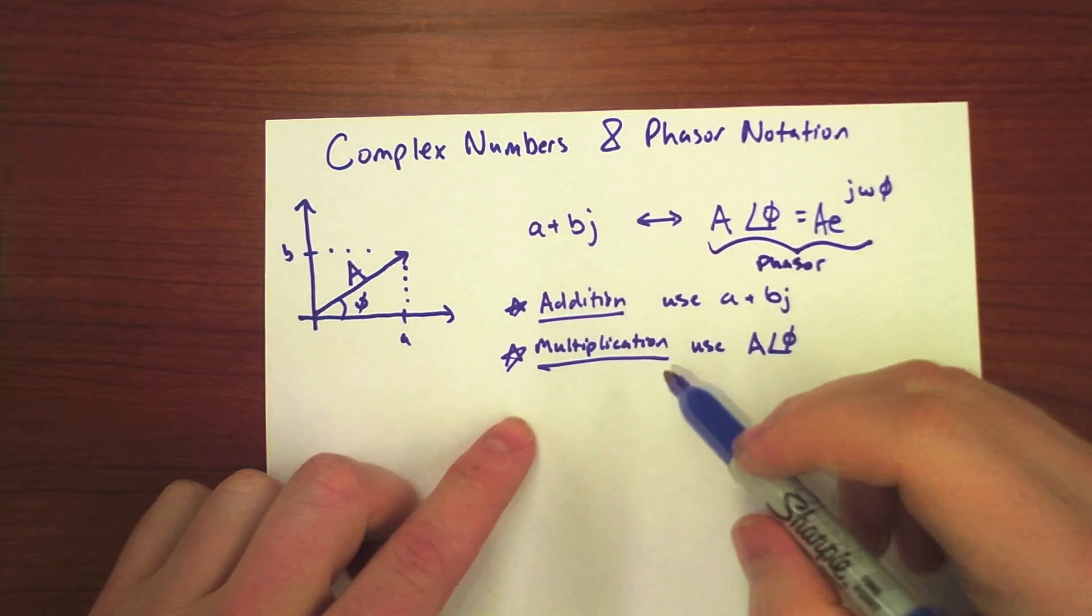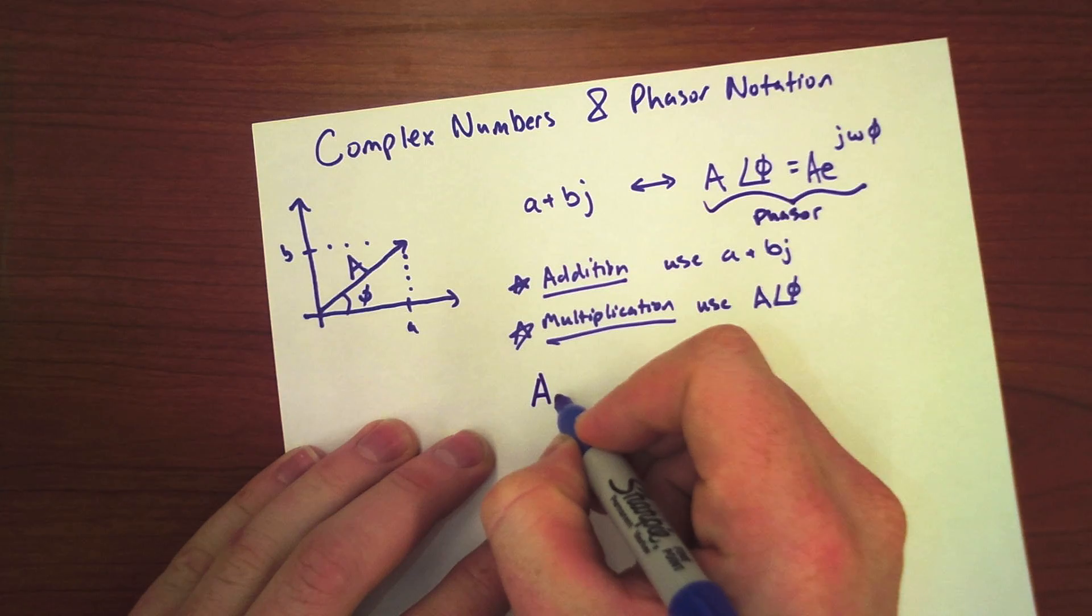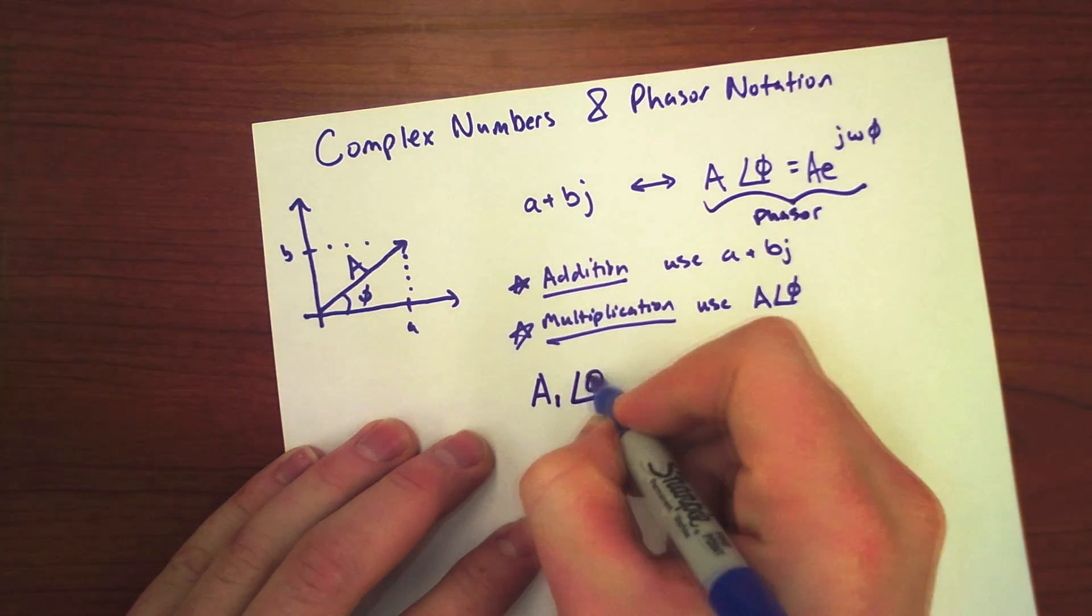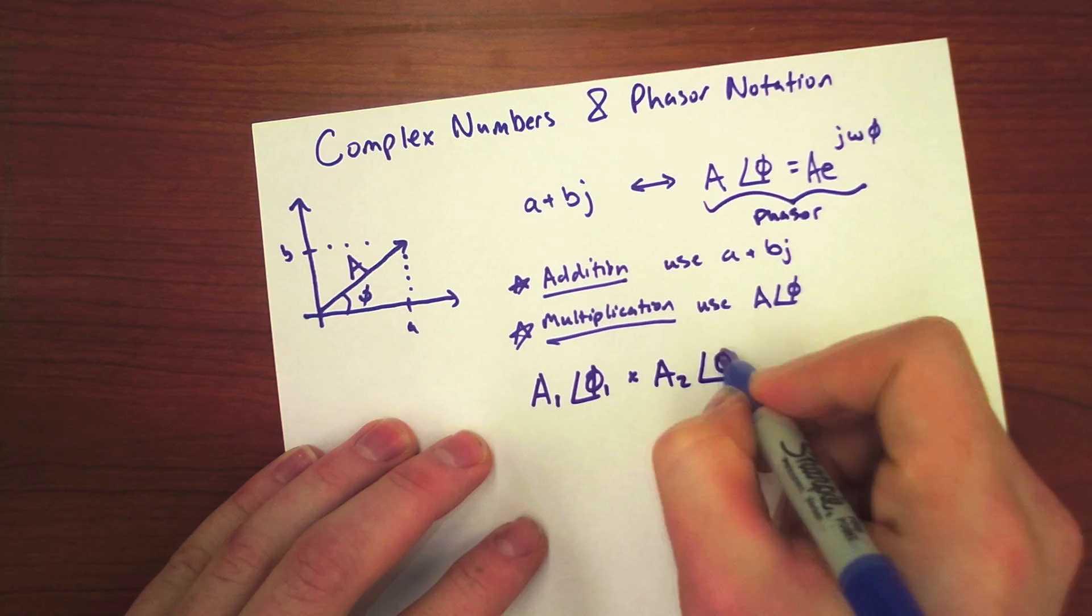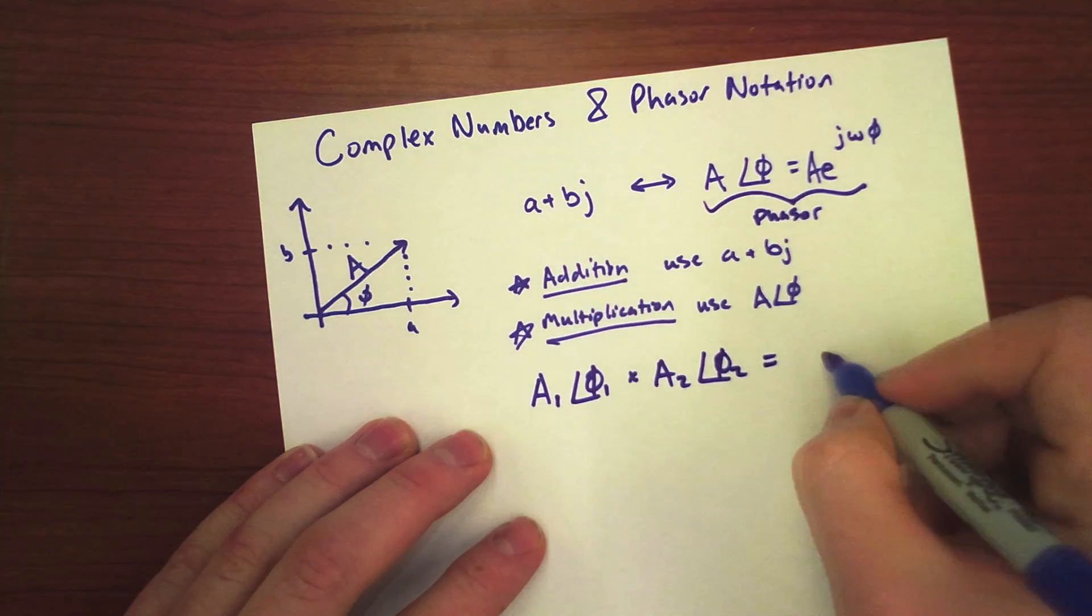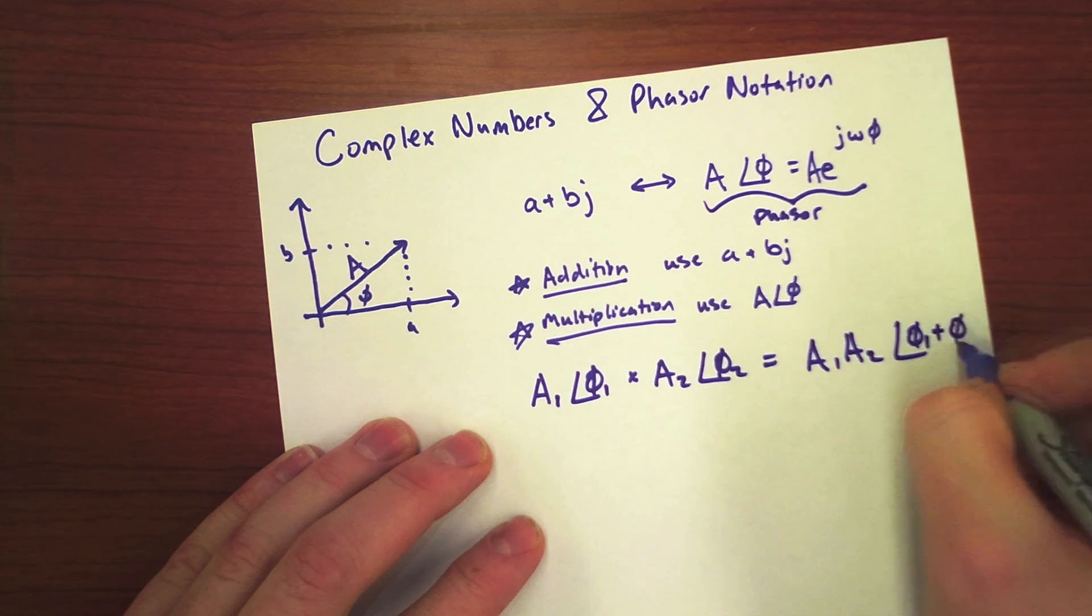When we're multiplying, we're going to use our phasor notation. We're going to do that because a1 angle phi1 times a2 angle phi2 is just going to be a1 a2 angle phi1 plus phi2.